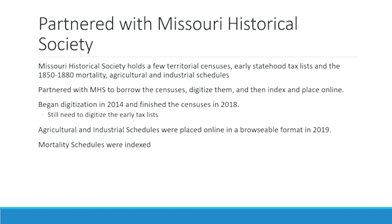We began digitization in 2014 and finished the censuses in 2018. We have not yet digitized the early tax lists but will be starting that in the new year. The agricultural and industrial schedules were placed online in a browsable format in 2019, and the mortality schedules were indexed and are now online in our census database.